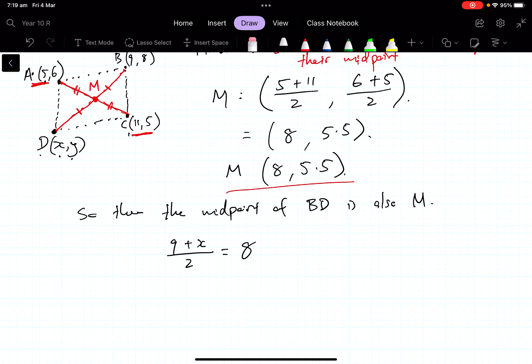Similarly, (8 + y)/2 is equal to 5.5, has to be because M is its midpoint. So if I now solve these two expressions...